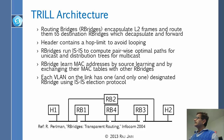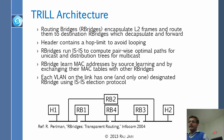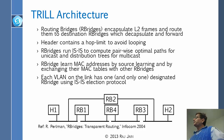R-bridges run IS-IS to compute pairwise optimal paths. The bridge will learn source addresses and pass them on to the other bridges, saying that these nodes are to the left of me, so I am the destination for them. Whenever somebody sees a packet going to H1, it will send it to RB1.